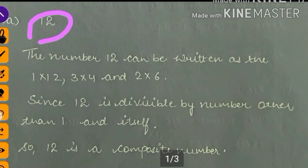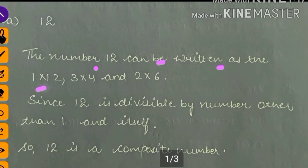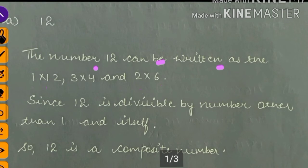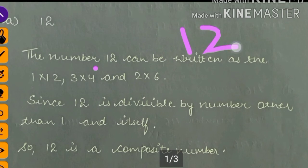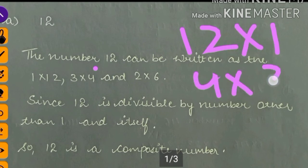The number 12 can be written as 1 into 12, 3 into 4, and 2 into 6. You also write like that: 12 into 1, 4 into 3, 6 into 2.